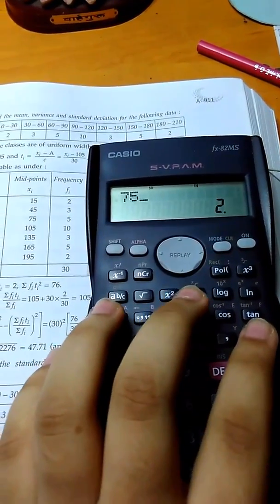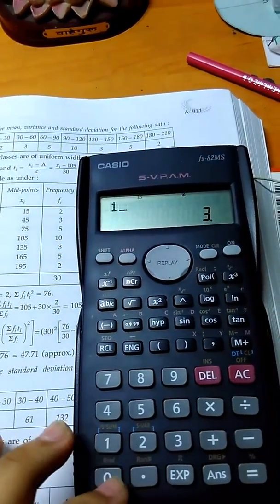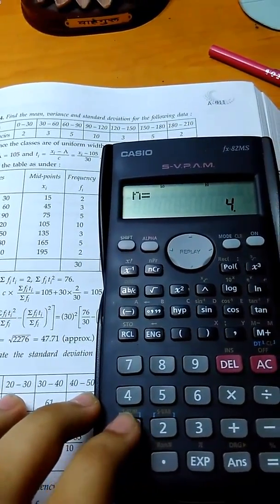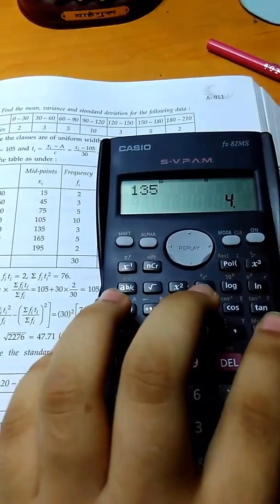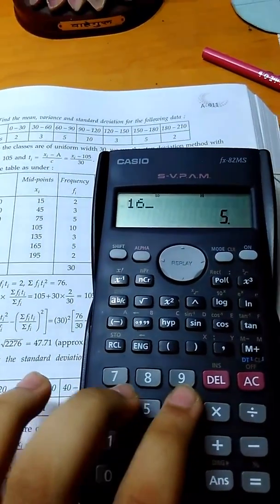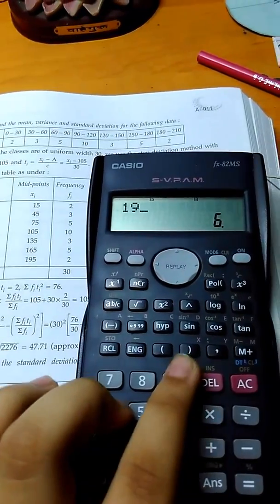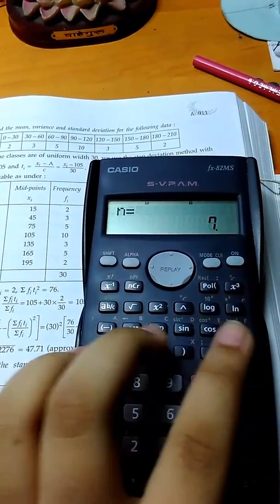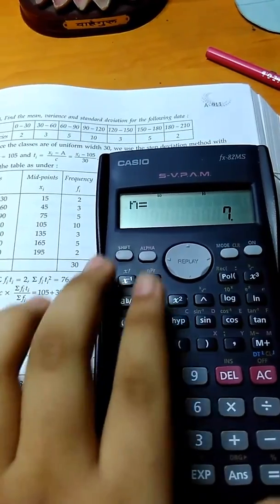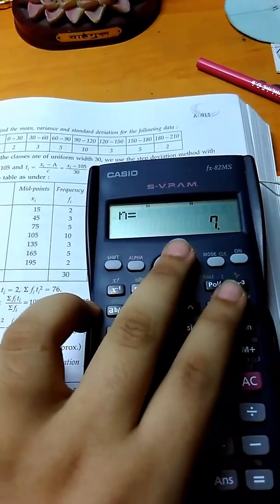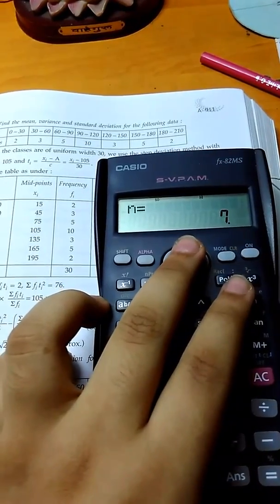M+, third value, 75, M+, fourth value, 105, M+, 135, M+, 165, M+, 195, M+. Now this has entered all the values, as you can see here, I've entered 7 values. Now to enter the corresponding frequencies,